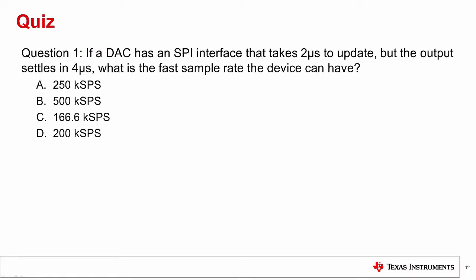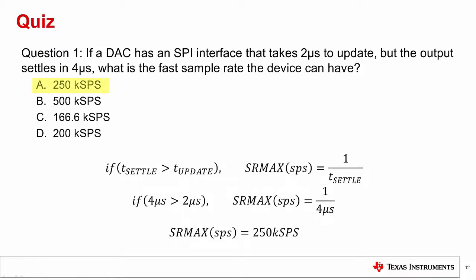Now let's do a short quiz on these topics to test our knowledge. Question one: If a DAC has an SPI interface that takes two microseconds to update, but the output settles in four microseconds, what is the fastest sample rate the device can have? A: 250 kS per second, B: 500 kS per second, C: 166.6 kS per second, or D: 200 kS per second.